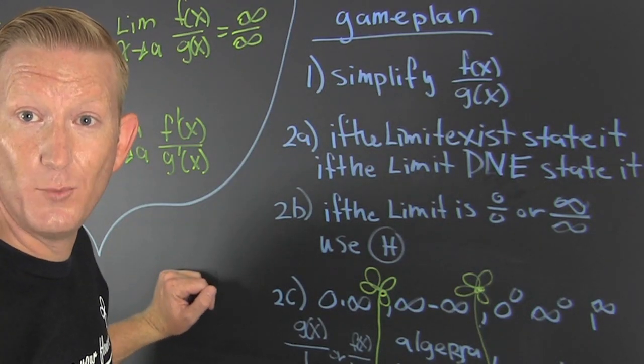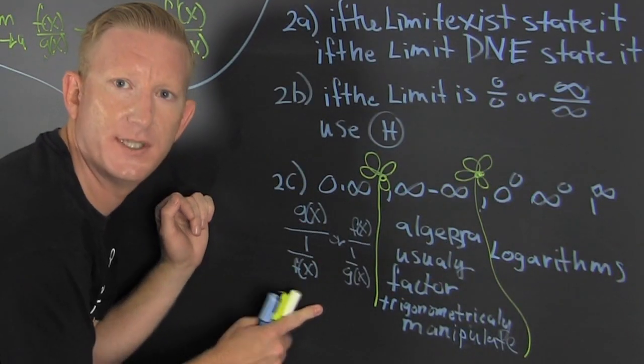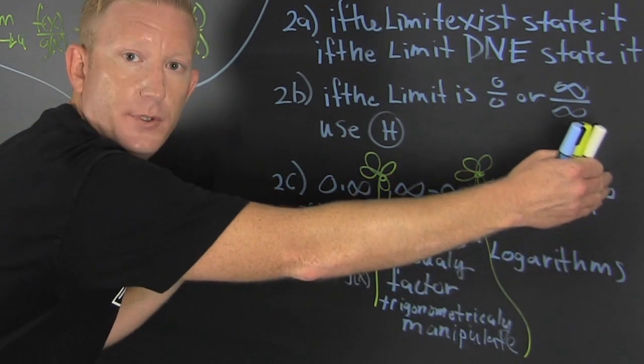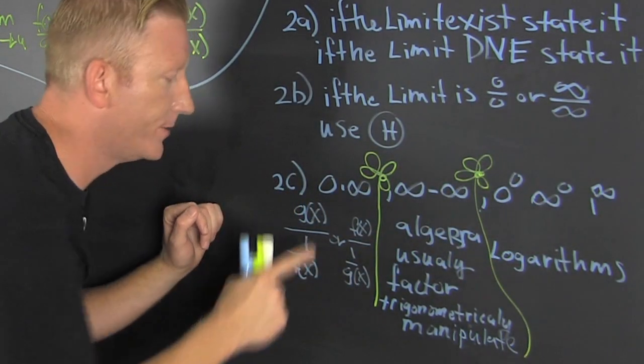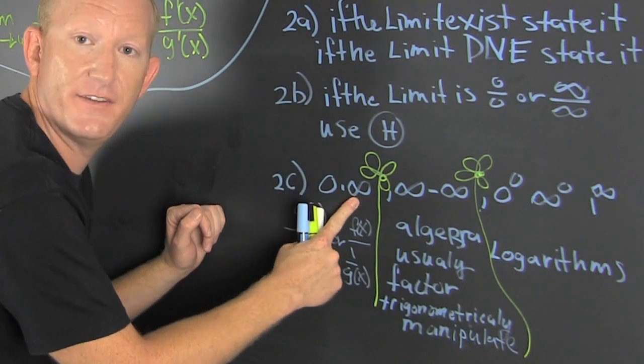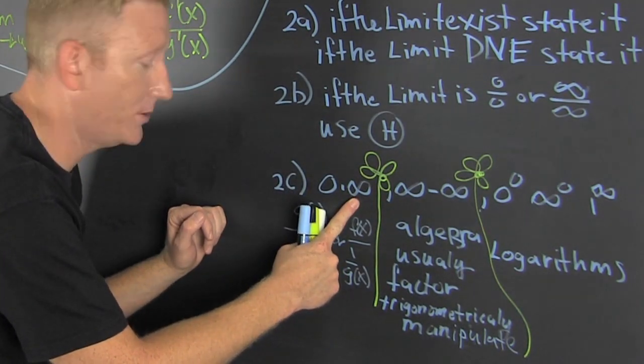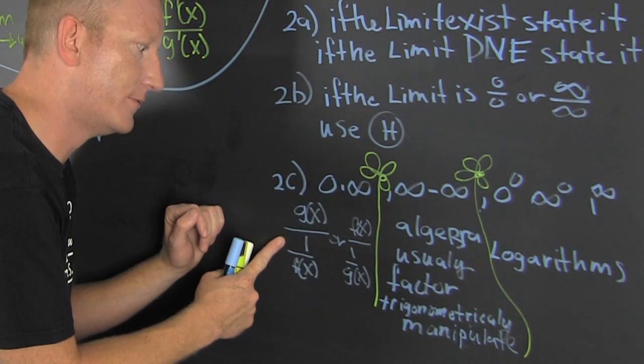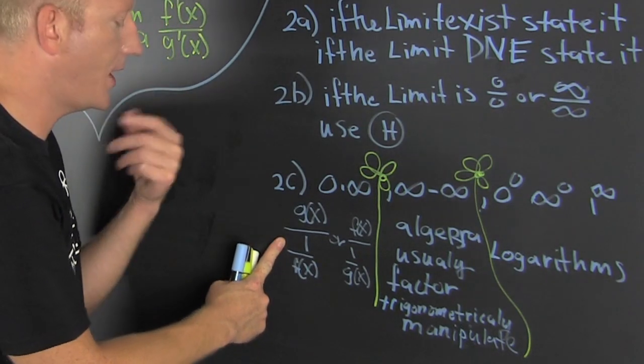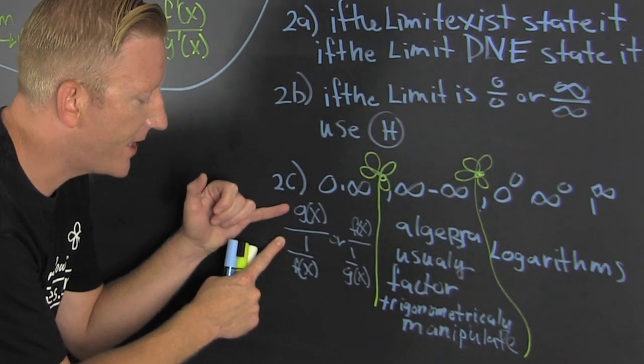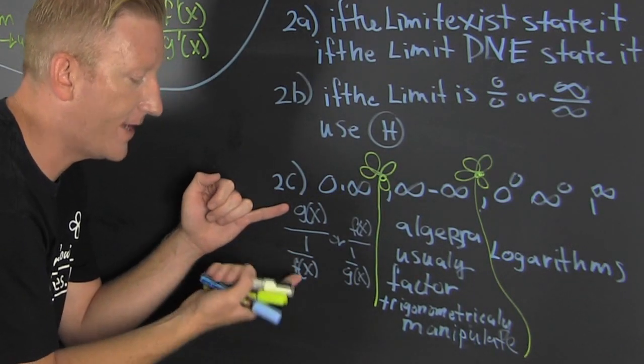Now down here, can you see all this? I believe so. There are other indeterminate forms: zero times infinity. If that's the case, then what do you want to do? You want to rewrite your fraction. There's a complex fraction. You're going to take your g(x) and divide it by one over f(x), which is the same as multiplying by the reciprocal, and it's going to be the same thing.